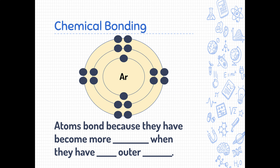A lot of material to cover. So first, if you are filling in this worksheet, we are starting right here: Why do bonds form? So here we have a Bohr model of argon. Argon is a noble gas, so it has a full outer energy level — full outer shell — which means it has eight, because the maximum number of electrons in any shell except the first one is eight. The first one can only have two electrons. So atoms bond because they become more stable when they have full outer shells.